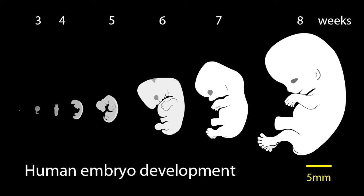This shows the human embryo development process of the first eight weeks. You can see the shape of the embryo quickly changes within these eight weeks. By eight weeks, it is still only about 5 cm long, but it already has the shape of a human. Did anyone notice the white dot here? This is the size of the fertilized egg at the same scale — showing how quickly cells proliferate and differentiate to form the human body.